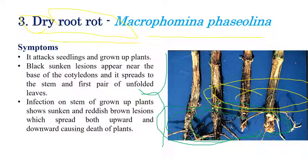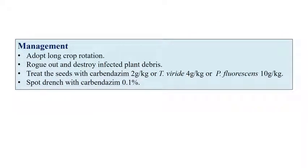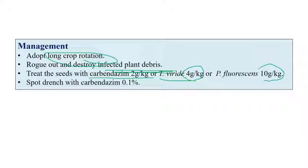Once the root is destroyed, everything is destroyed — seedlings or grown plants will be lost. For management: crop rotation and destroying infected plant debris are recommended. Seeds can be treated with carbendazim at 2 g per kg. Biocontrol agents: Trichoderma viride at 4 g per kg of seeds, or Pseudomonas fluorescens at 10 g per kg of seeds. Soil drench or spot drench with carbendazim at 0.1% can effectively manage this disease. Biocontrol agents are preferred as they enrich the soil microflora.